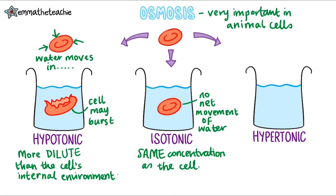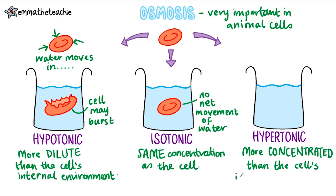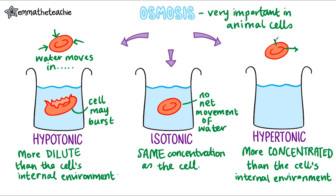And finally, we've got a hypertonic solution. This means it is a lot more concentrated than the red blood cell's internal environment. This time the water will move out of the red blood cell and into the beaker, as the red blood cell solution is more dilute and water moves by osmosis to the more concentrated solution. If it's a really big difference in concentration, a lot of water will leave the cell, the cell will shrink, and it won't function properly anymore.